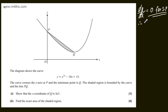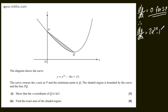So subbing this in, dy/dx will be equal to: differentiating e to the 2x gives 2e to the 2x, differentiating minus 18x gives minus 18, and differentiating the constant gives 0. So we have 0 equals 2e to the 2x minus 18.